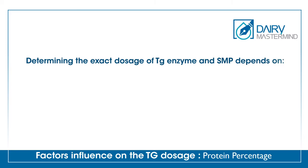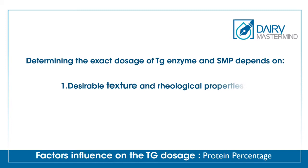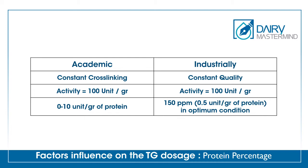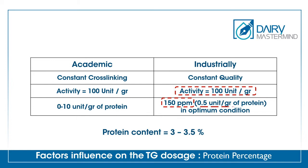Determining the exact dosage of TG enzyme and SMP depends on two items: desirable texture and rheological properties, and cost of the recipe. Industrially, to keep quality constant while reducing costs, they reduce the amount of protein and reinforce the remaining with TG enzyme. TG enzyme producers in optimum conditions recommend 150 ppm of TG with activity of 100 units per gram when the protein is about 3 to 3.5%. This value is equal to 0.5 units of enzyme per gram of protein. This amount can be increased up to 3 times for a stirred yogurt.